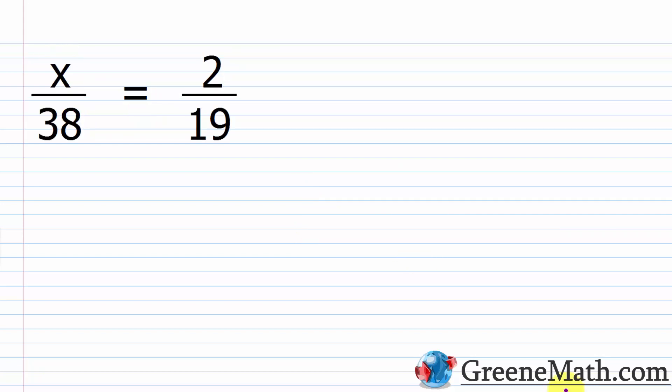Now let's talk about solving proportion equations. We previously reviewed how to solve equations with fractions — one way is to multiply both sides by the LCD of all the denominators. But a quicker way when you have one fraction equal to another is just to cross-multiply to set everything up.